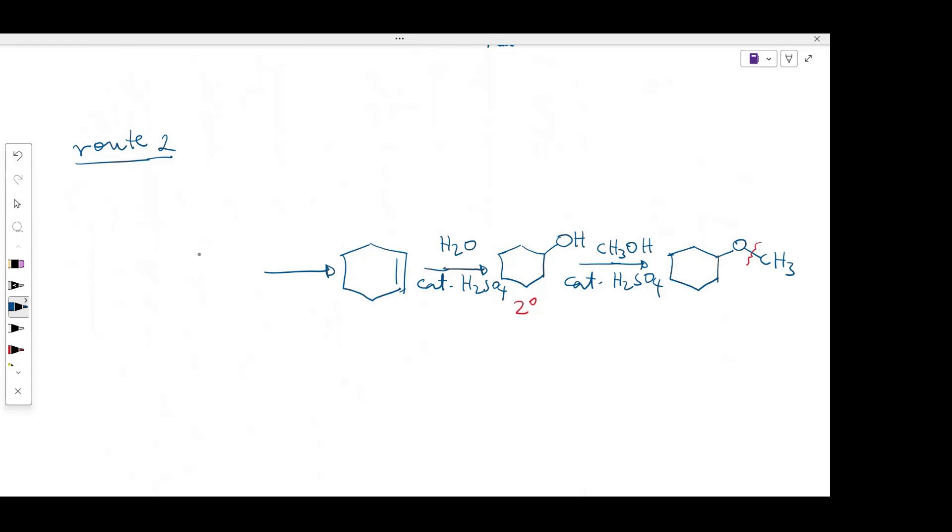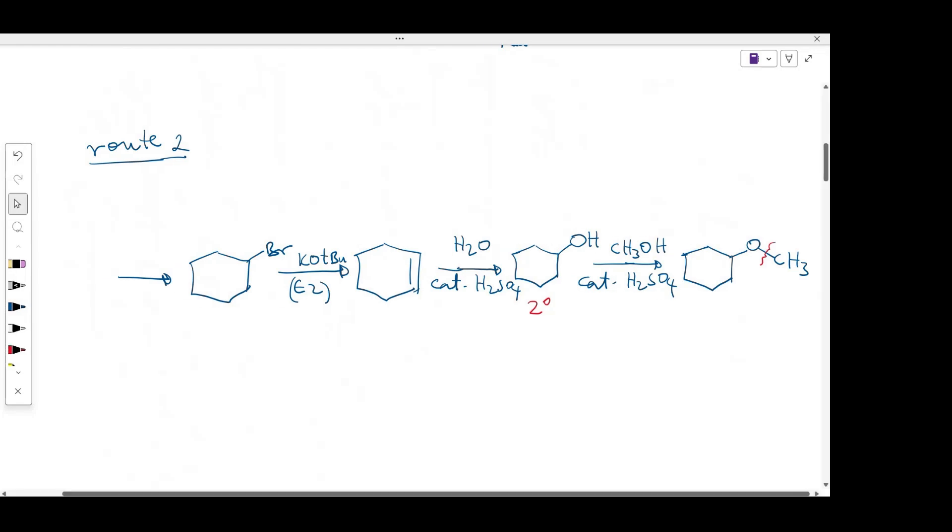In this case, I can convert the alkyl halide to alkene via elimination reaction. So again, we can use potassium tert-butoxide. And this reaction will go through E2 mechanism. And to make the alkyl halide, we can just do radical bromination of alkane.